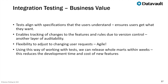The business value of integration testing is that it aligns our tests with specifications that users understand, ensuring we deliver what the users actually want. The executable specification in Python Behave enables tracking of changes to features and rules via version control — if a user wants a new addition to a feature weeks later, we rework it, commit it, and there's a history of that. It's another layer of auditability to our Data Vault and keeps us agile by enabling flexibility to adjust to user requests.